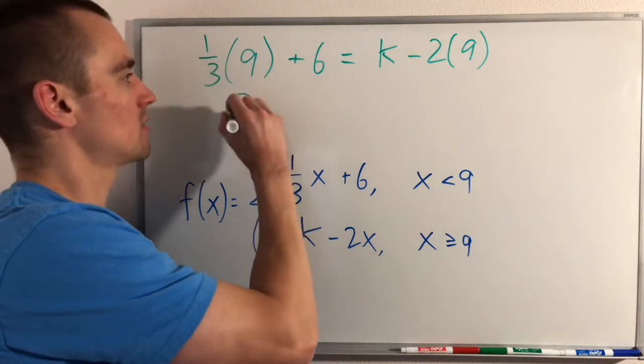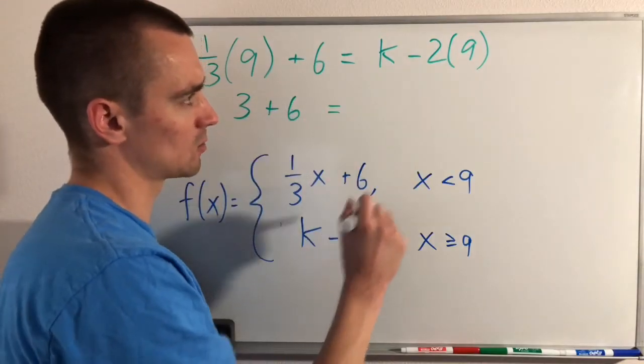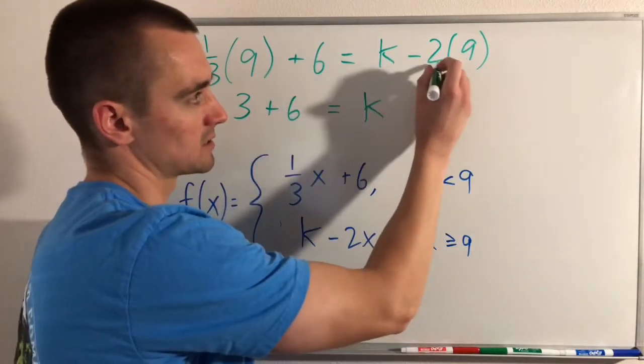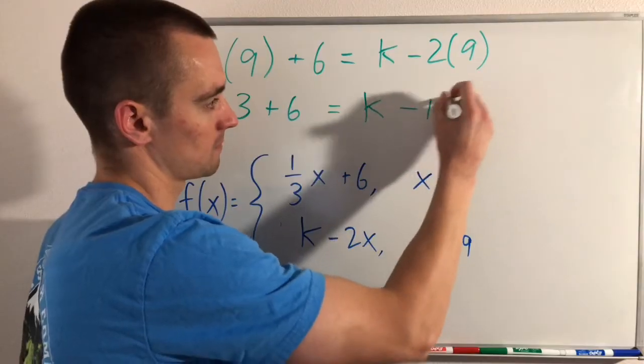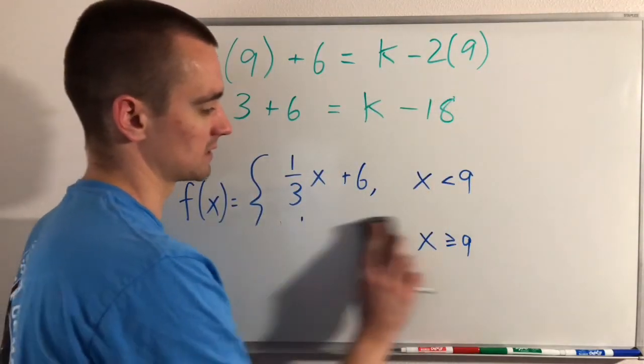One-third times 9 is 3, plus 6, and that's going to equal k minus 2 times 9 is 18.